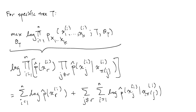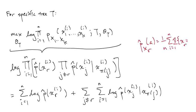That gives us an expression with empirical distributions. As a reminder, the empirical distribution of x_r evaluated at some value a equals the fraction of times a appears in the training data — (1/n) times the count of times we see value a for the r-th random variable. Similarly, the empirical conditional probability table is the fraction of times two random variables jointly take on specific values, divided by the number of times the parent takes on a specific value.